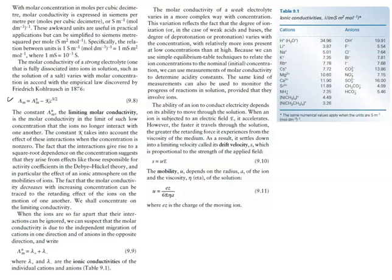When ions are so far apart that interactions can be ignored, the molar conductivity is due to the independent migration of cations in one direction and anions in the opposite direction. We can write Λ° = λ+ + λ−, where λ+ and λ− are the ionic conductivities of the individual cations and anions, some of which are listed in Table 9.1.